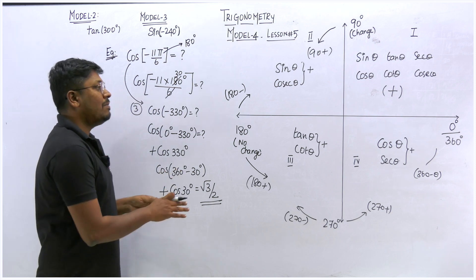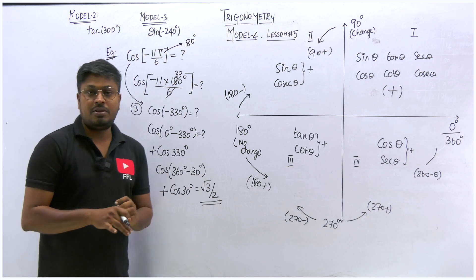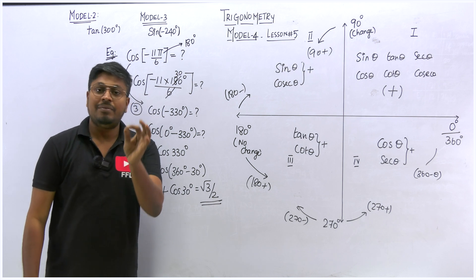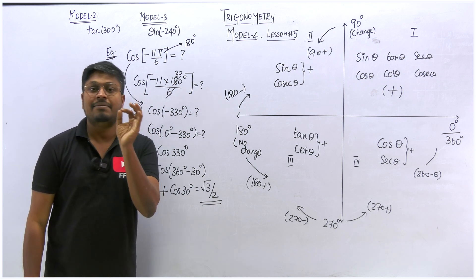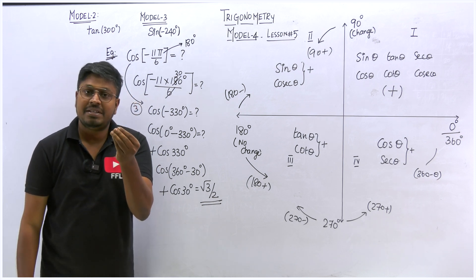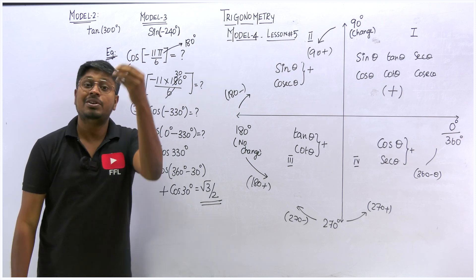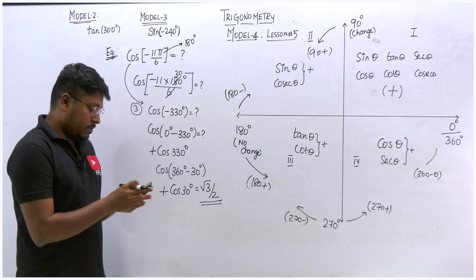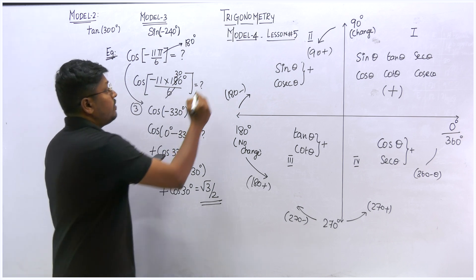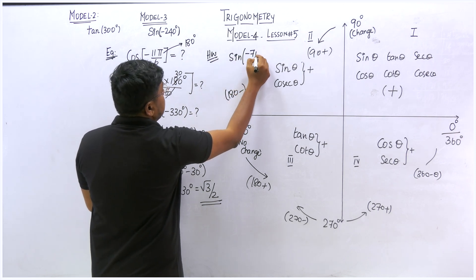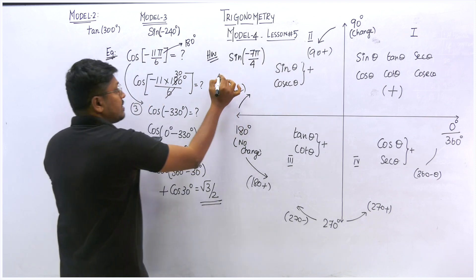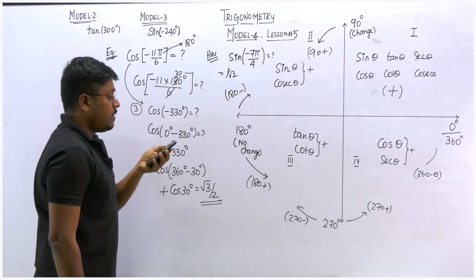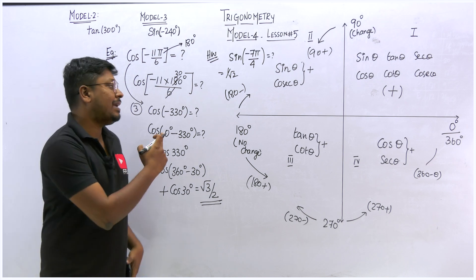Now you understand model number 4. The difference between models 2, 3, and 4: in model 3 you directly write 0 minus; in model 4 you first convert pi to 180, simplify to get a model 3 question, then solve. For the homework question — sin of minus 7 pi by 4 — try solving it yourself. The answer is 1 by root 2.